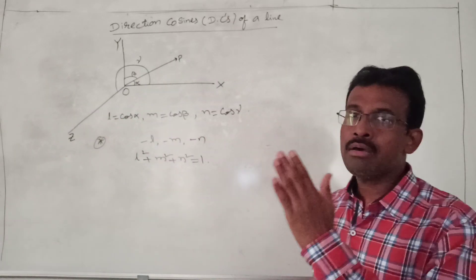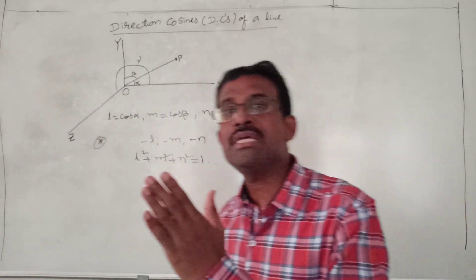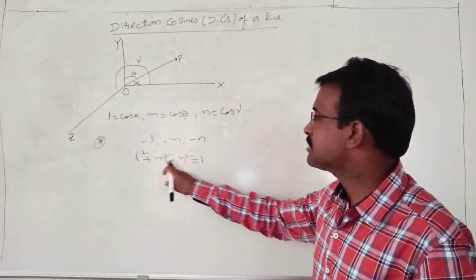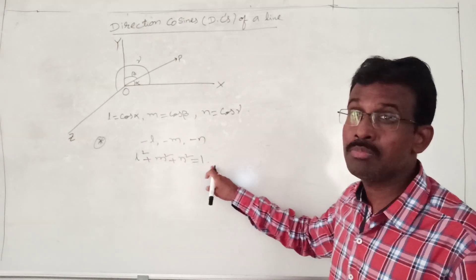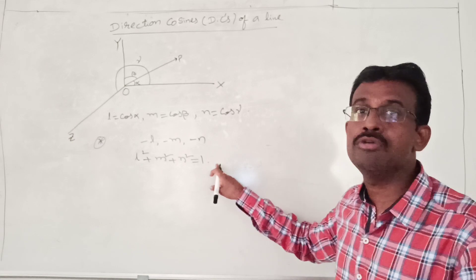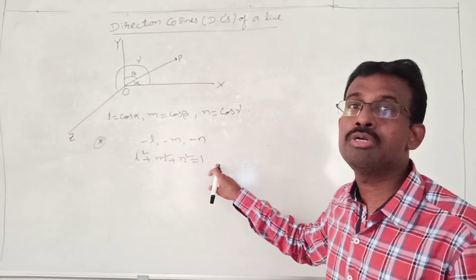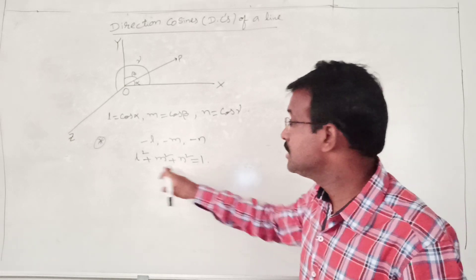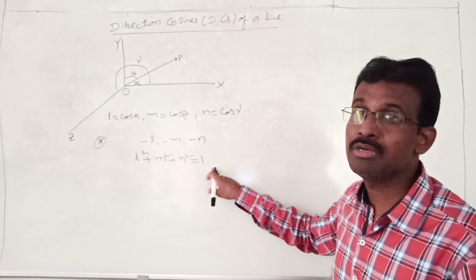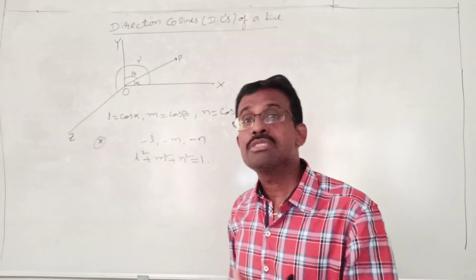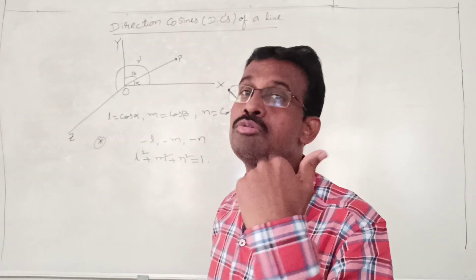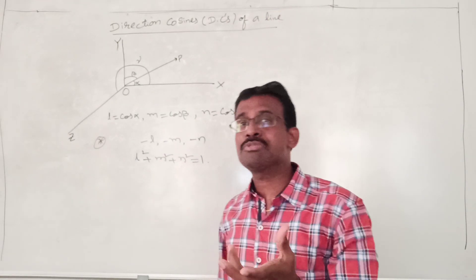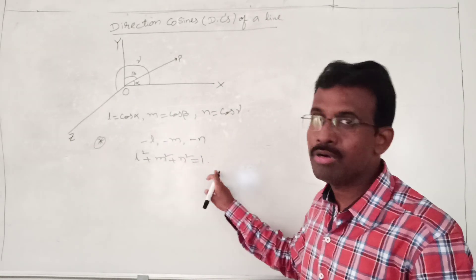If L, M, N are direction cosines of a line, then L squared plus M squared plus N squared should be equal to 1. This is a very important concept from unit number 2 onwards — in so many stages we are going to use this. If L, M, N are direction cosines of a line, then directly L squared plus M squared plus N squared equals 1.